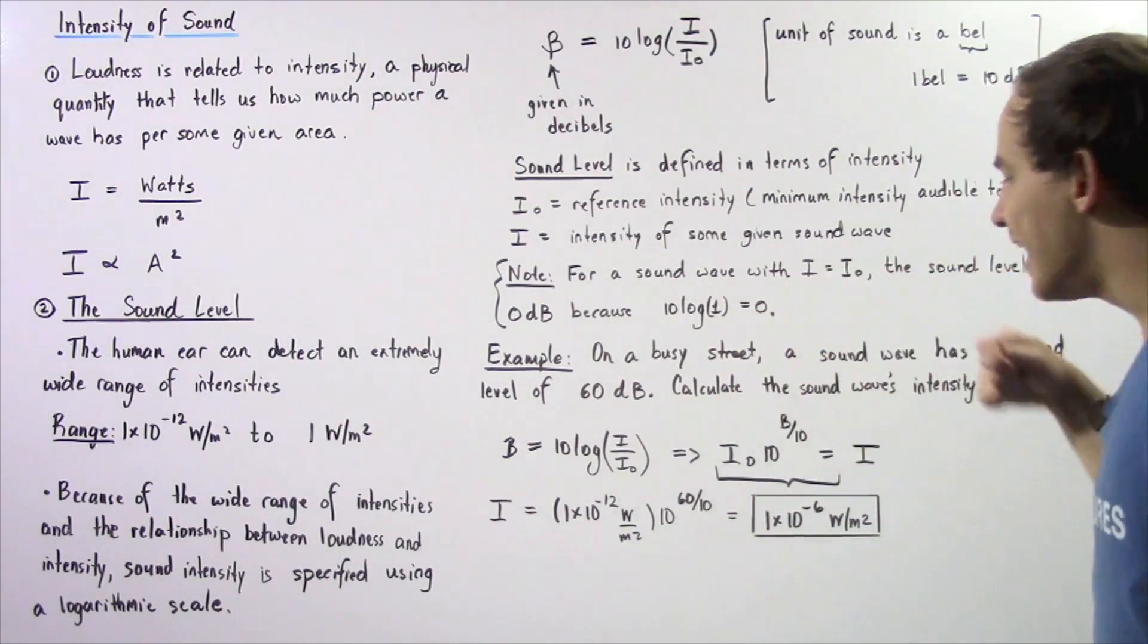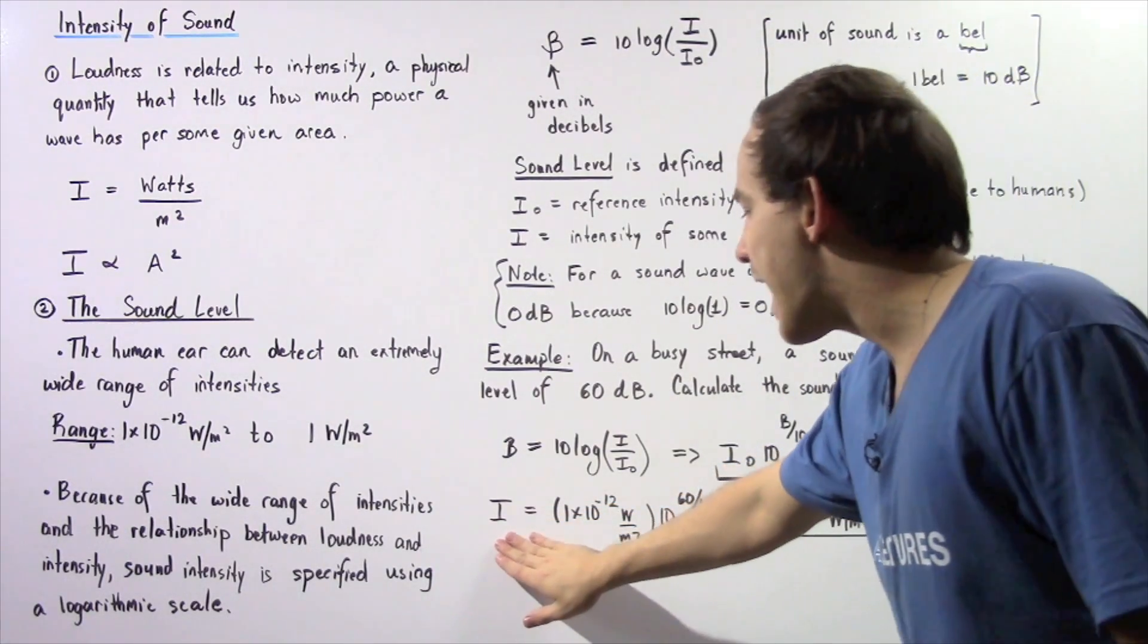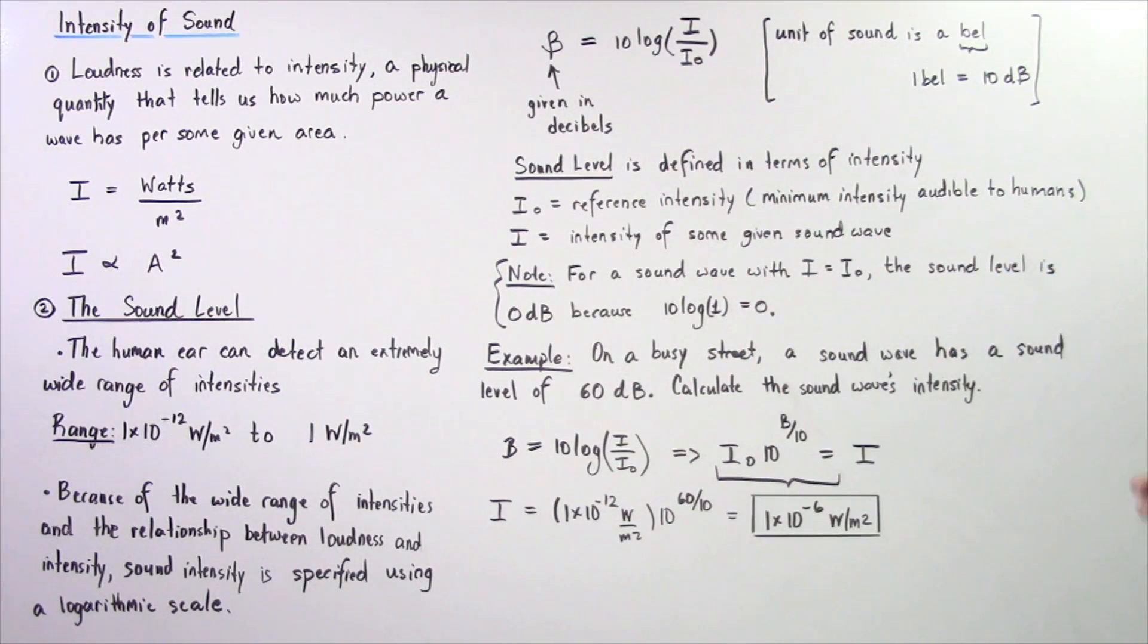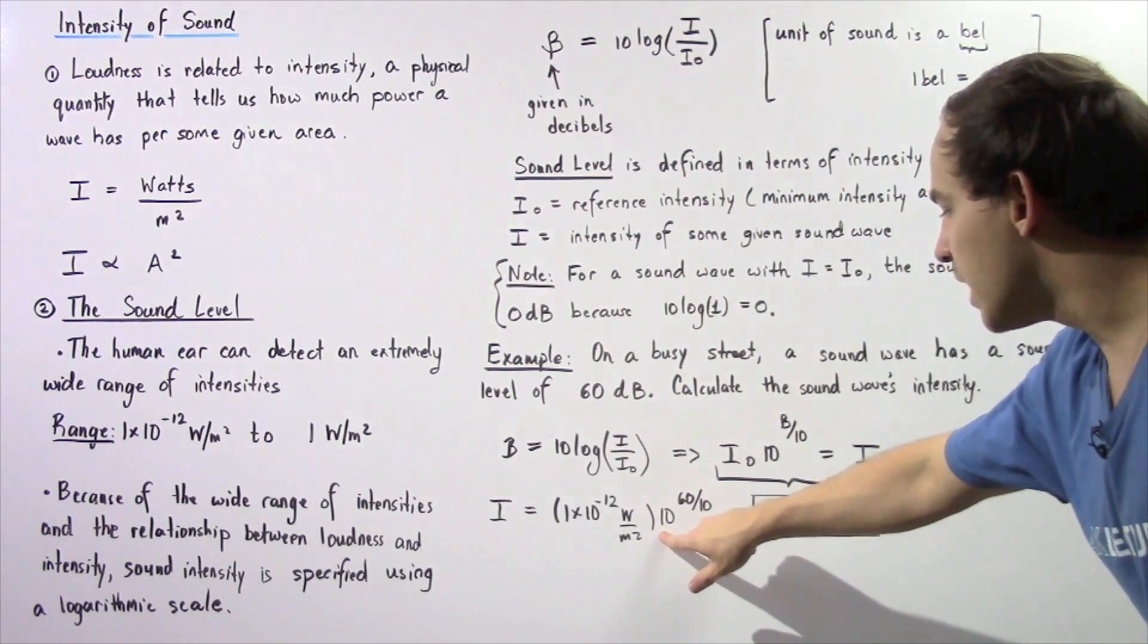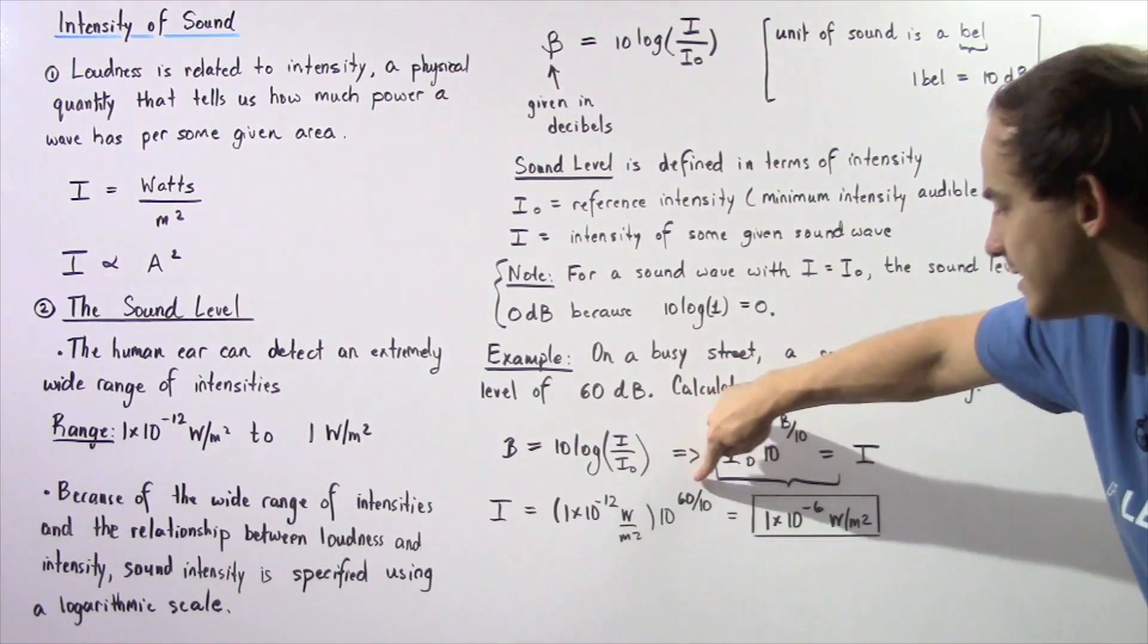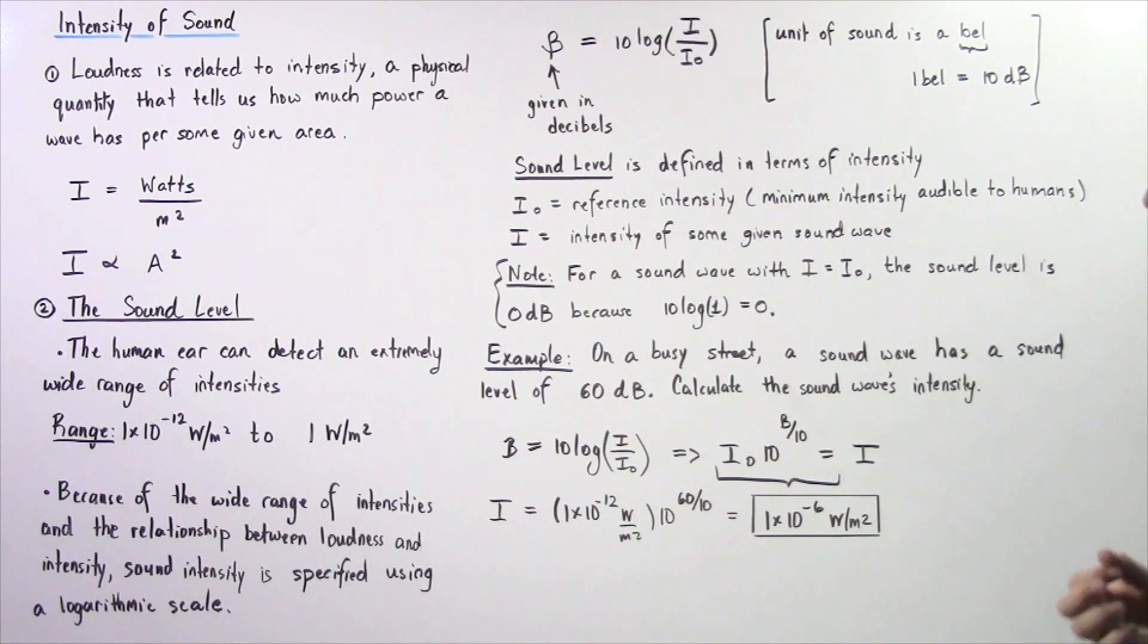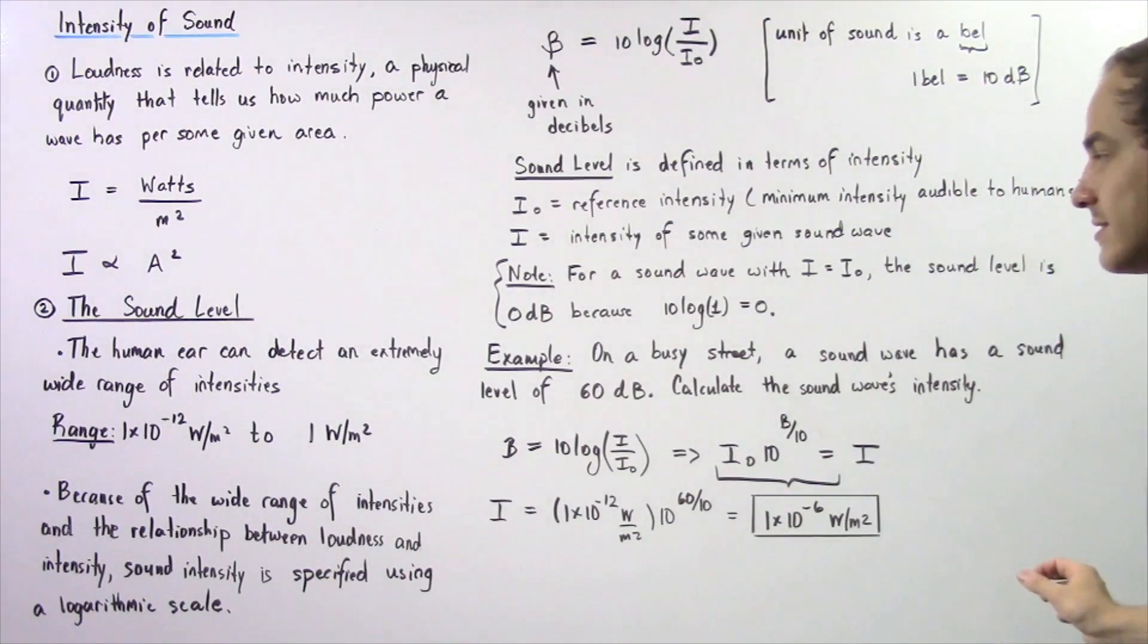Because we know what I₀ is and what our B is, we can solve for the intensity of that sound wave. Intensity equals 1 × 10^-12 watts per meter squared, this quantity multiplied by 10 to the 60 divided by 10, so 10 to the 6th power. We get a value of 1 × 10^-6 watts per meter squared as the intensity of this sound wave.